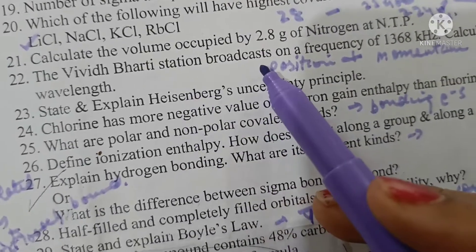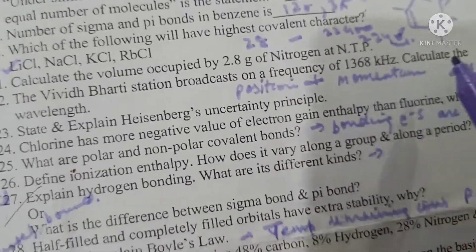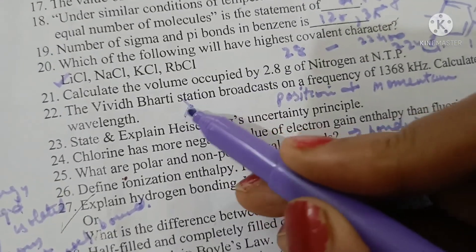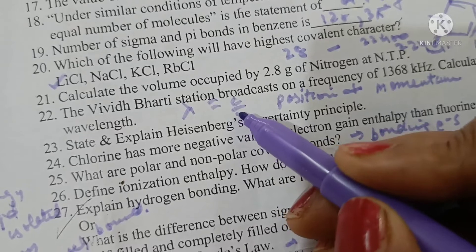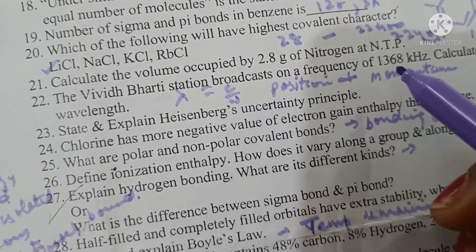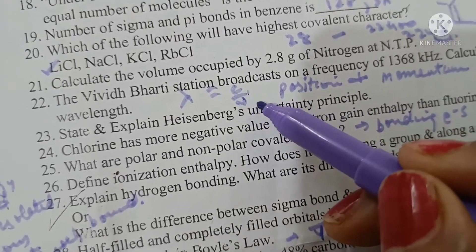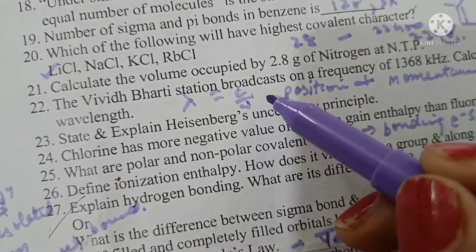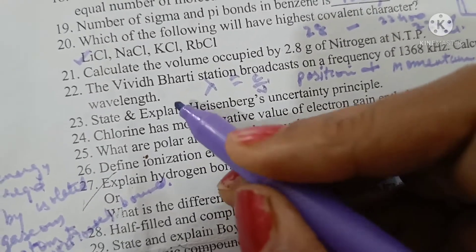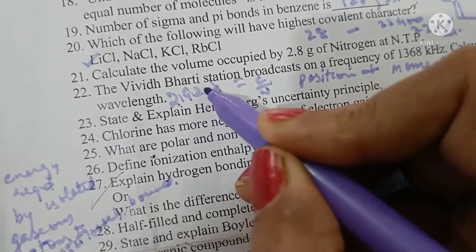The Vivedh Bharti station broadcasts on a frequency of 1368 kilohertz. Calculate the wavelength. Lambda equals C by nu as C is 3 into 10 raised to power 8 meters and frequency is 1368 into 10 raised to power 3 hertz. Dividing and solving we get the answer equal to 219.2 meters is the wavelength.